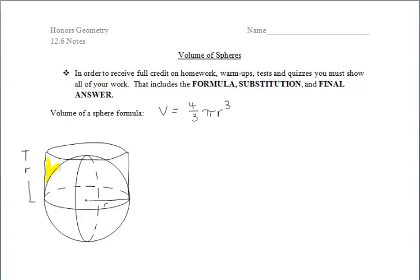He noticed something particular about the space outside of the top half of the sphere inside of the cylinder — this yellow space here. Using similar ideas of volume, like we did before with the sheets of paper, he said: at a height of x, the slice of the cylinder is a circle of radius r, while a slice of the sphere at the same height would be a circle of a smaller radius. The space outside of the sphere would be the ring between these two circles.